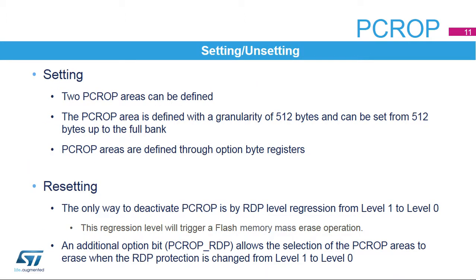The proprietary code readout protected areas in flash memory are defined through the option bytes. Two PCROP areas can be defined, each with a granularity of 512 bytes and configurable from 512 bytes up to the full bank. The areas are protected against data accesses. Sectors protected with the PCROP feature are also protected against write access, offering protection against unwanted sector write or erase operations.